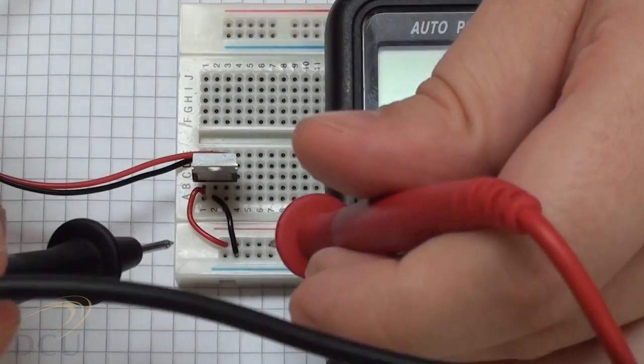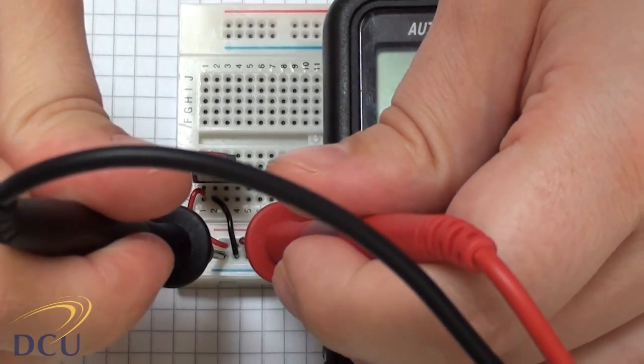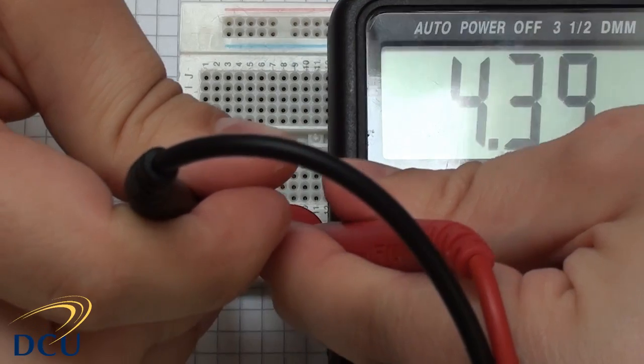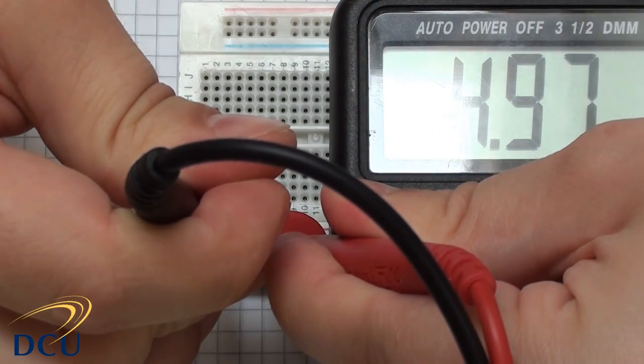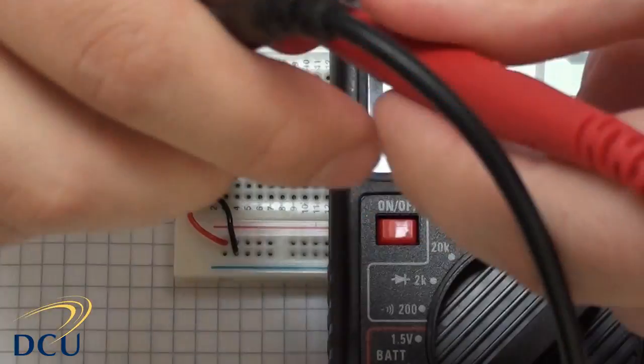And we should be able to see then our supply. What do we get now that we've got our regulated supply? Well, if I can get my hand out of the way, you should see that it's about 4.97 volts. So it means our voltage regulator is working perfectly.